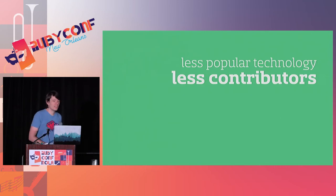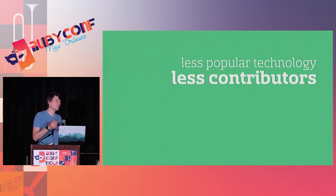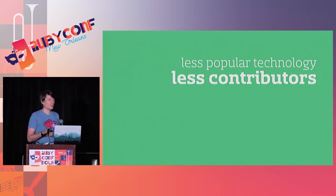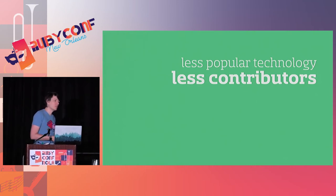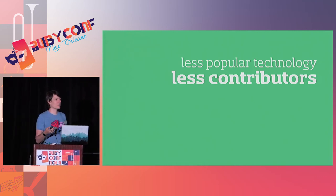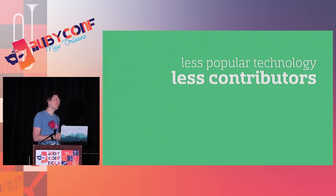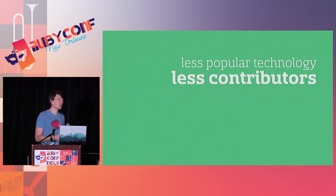The other downside of the standalone API was that we built it in Sinatra and SQL because it was super tiny and just returned some JSON and marshalled data. Despite being a completely reasonable decision at the time, it meant fewer people were familiar with it compared to the RubyGems.org app written in Rails with ActiveRecord. We wound up with a lot fewer contributors — partly because people didn't know it existed, but also because even if they did, they weren't familiar with the framework and tools.